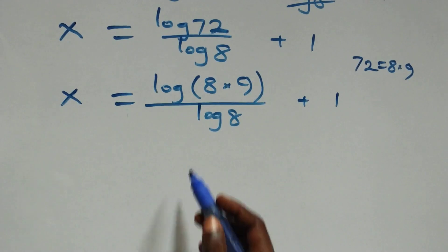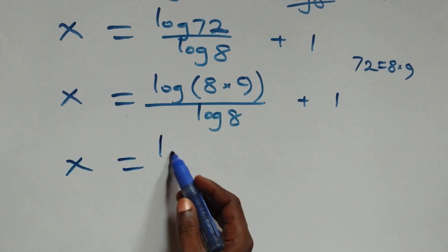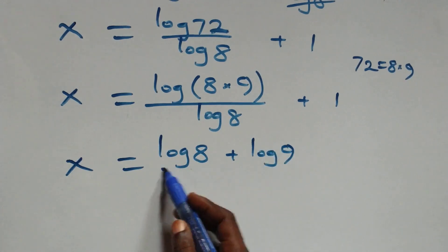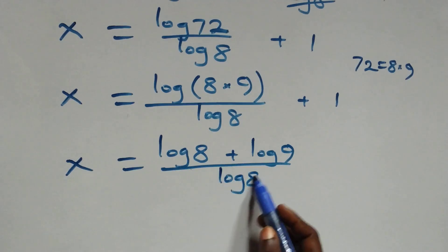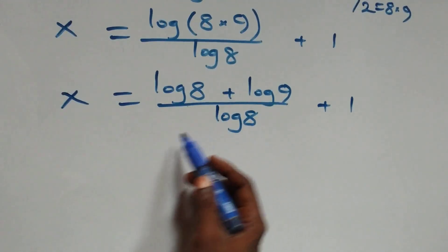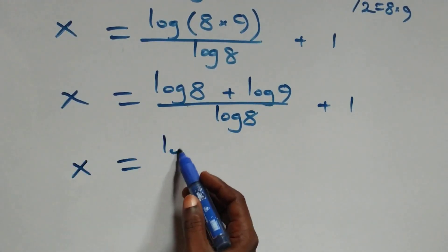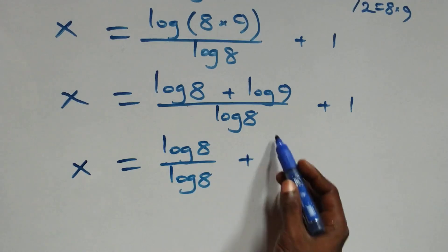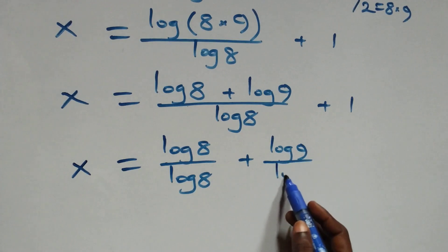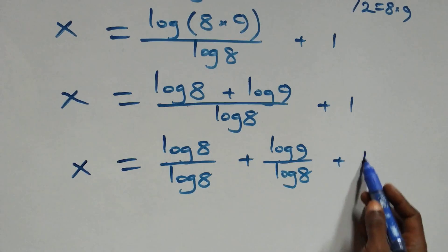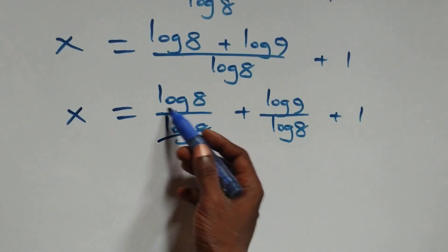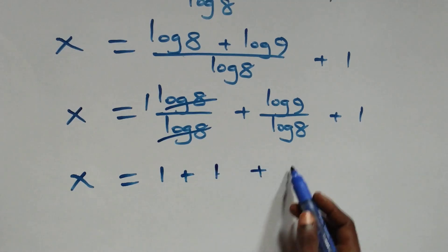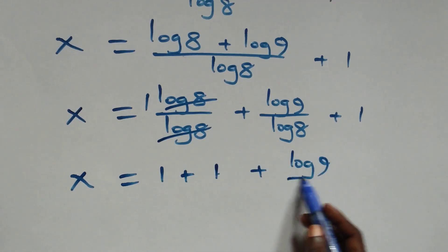This follows the law of logarithms again: x equals log 8 plus log 9, all over log 8, plus 1. We separate this into two fractions: x equals log 8 over log 8 plus log 9 over log 8, plus 1. Log 8 over log 8 gives one, so x equals 1 plus log 9 over log 8.